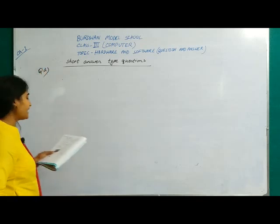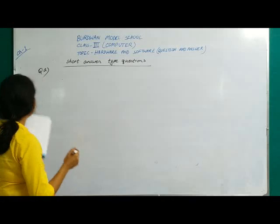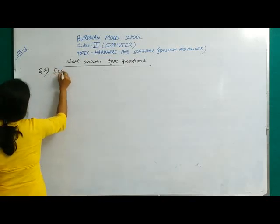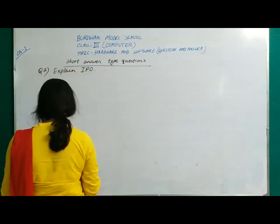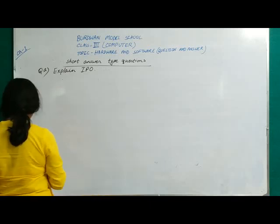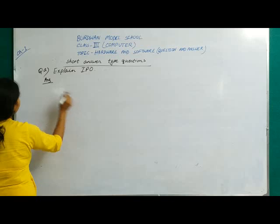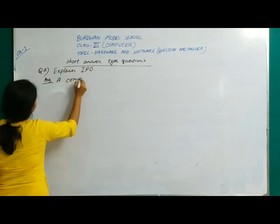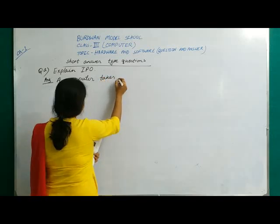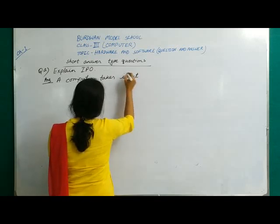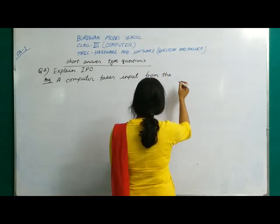What is the full form of IPO? Input, Process, Output. You have to explain that. I stands for Input, P for Process, O for Output. Our computer takes input from the keyboard or mouse.